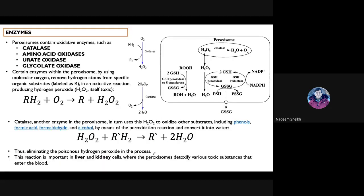The enzymes present in peroxisomes can be categorized into four types: catalase, amino acid oxidase, urate oxidase, and glycolate oxidase. The last three are mainly involved in oxidation and reduction reactions, and when these oxidases act they produce hydrogen peroxide within the organelle. This hydrogen peroxide is toxic and is immediately detoxified by catalase, which is also found in the peroxisome.